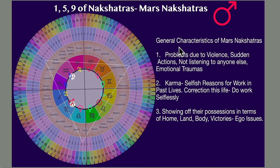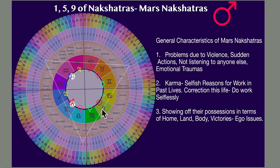The general characteristics of Mars nakshatras: Number 1 — problems due to violence, sudden actions, not listening to anyone else, and emotional traumas. These are the typical characteristics of Mars, brought into these three nakshatras. Number 2 — karma: selfish reasons to work in past lives. In the past life, they worked very selfishly for themselves and their egotistical glorification only. In this lifetime, they come to solve it by working selflessly for others, to work in a team, and not just for egotistical gratification. This is the challenge and karma of Mars nakshatras.